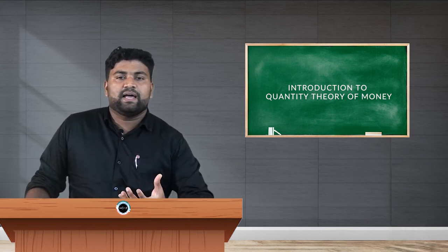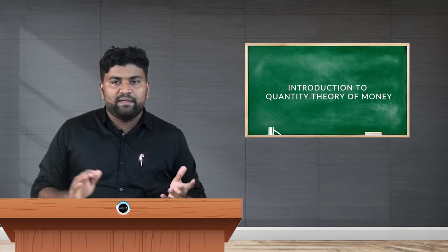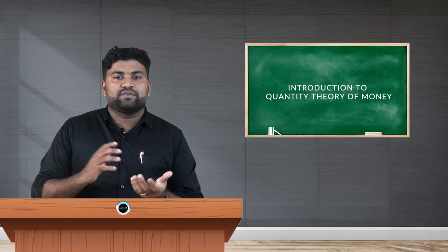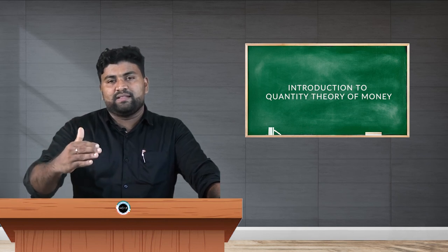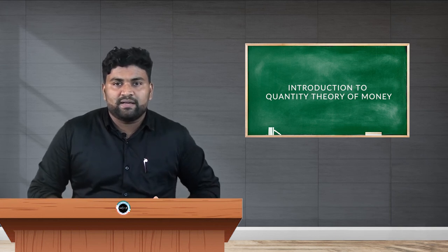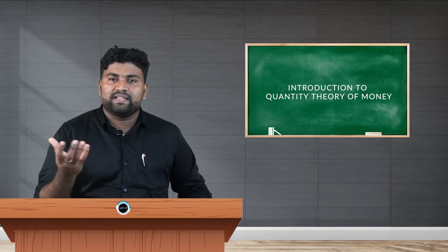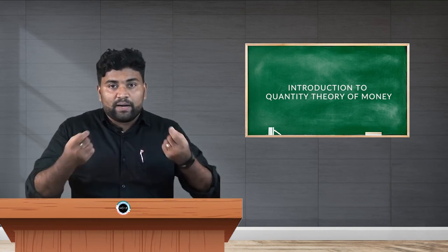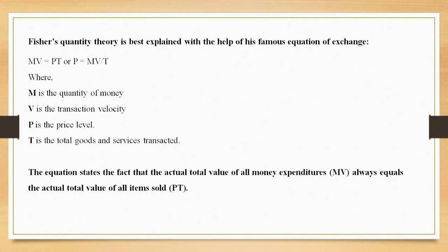Fisher's MV = PT can also be explained as: money demand equals money supply. Whatever money supply takes place in the economy, the entire amount will be spent over goods and services. That is why Fisher's quantity theory of money is called the transaction approach — he says there is no money left with the public to save.